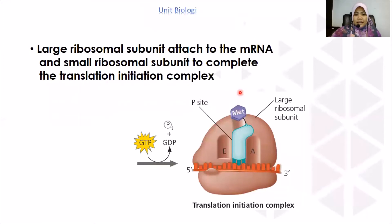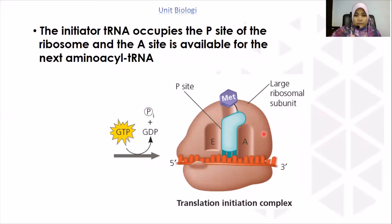Next, the large ribosome subunit will attach to the mRNA and to the small ribosomal subunit to form the translation initiation complex. When the large ribosome binds to the mRNA and the small ribosomal subunit, the P site of the large ribosome will be occupied or filled by the initiator tRNA, while the A site is free — available for the next amino acid tRNA, or available for the next charged tRNA.